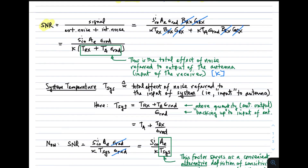Putting this all together, the signal-to-noise ratio is the ratio of signal to external noise plus internal noise. Using the expressions obtained above, there is a lot of cancellation — the bandwidths and the gains of the receiver cancel out. Factoring out Boltzmann's constant in the denominator leaves the expression T_rx plus T_a times the radiation efficiency of the antenna. Note that this is the total effect of the noise referred to the output of the antenna: T_a·ε_rad is the antenna temperature diminished by the antenna, and T_rx is the input-referred equivalent noise temperature of the receiver.